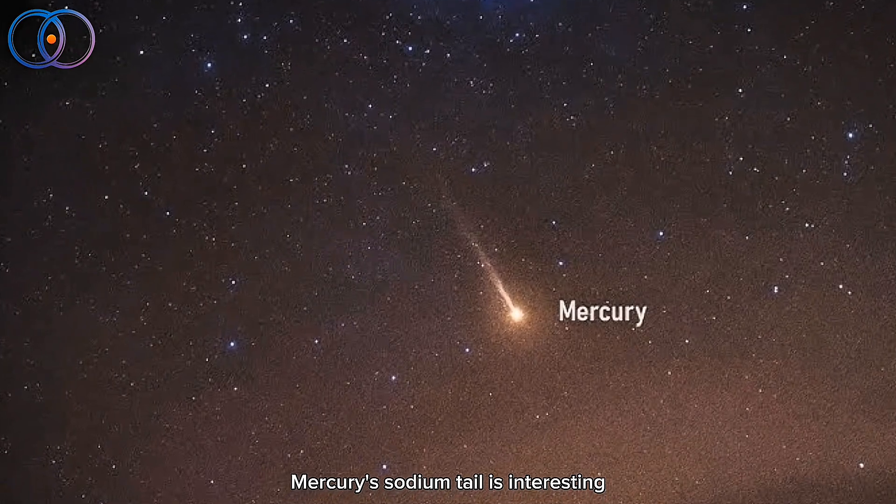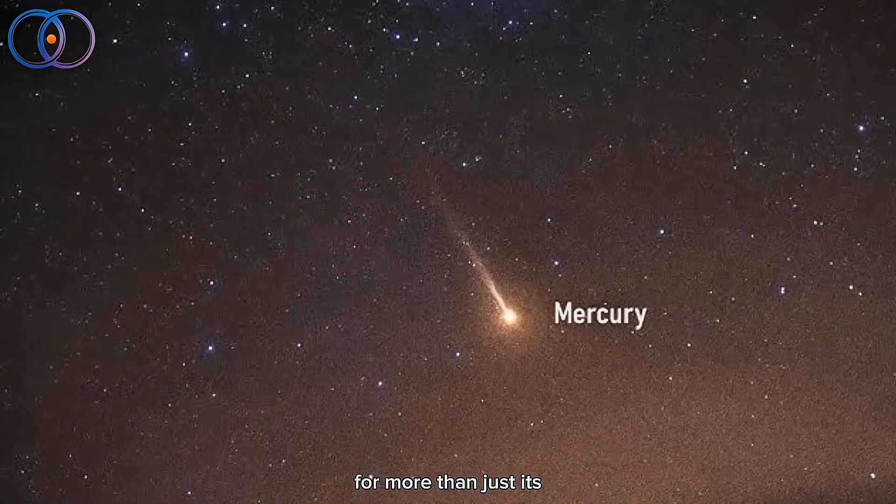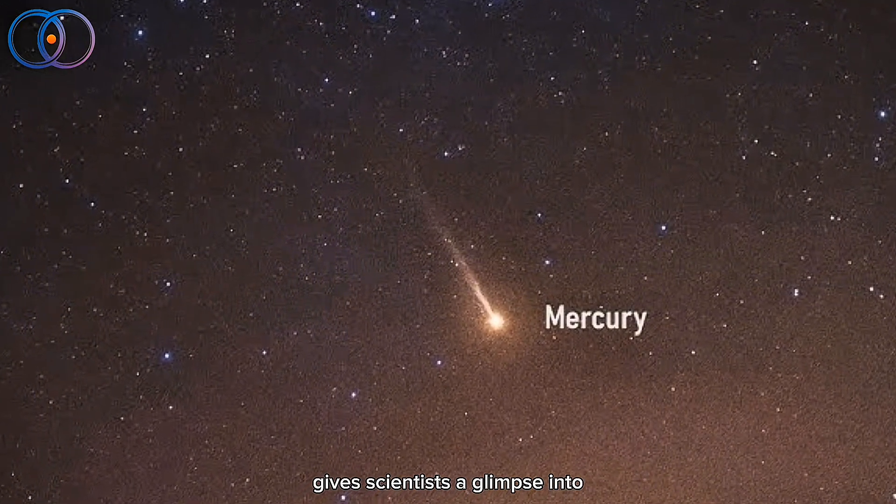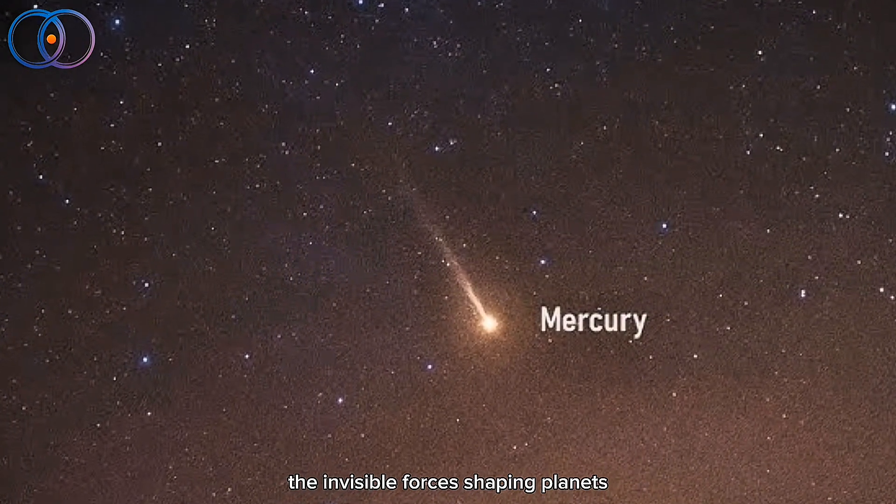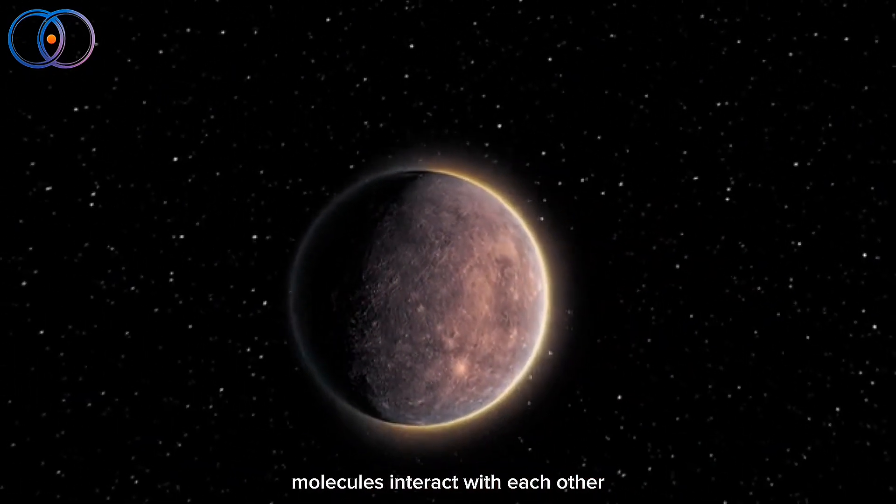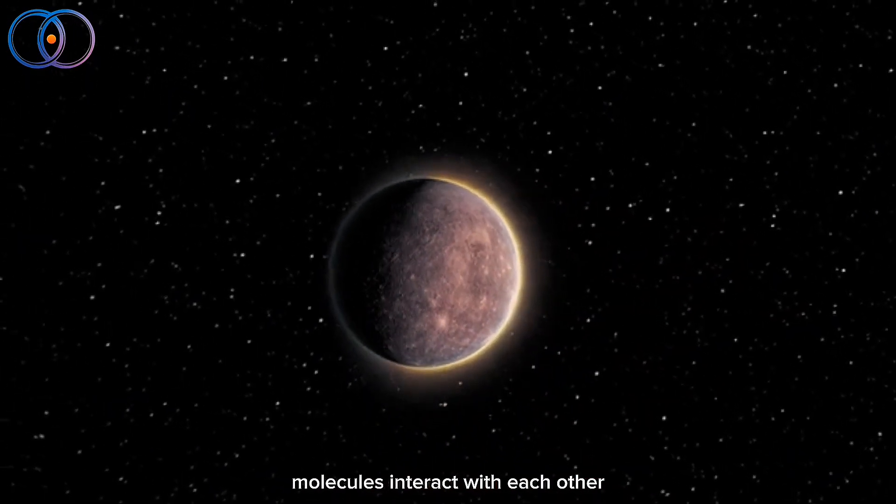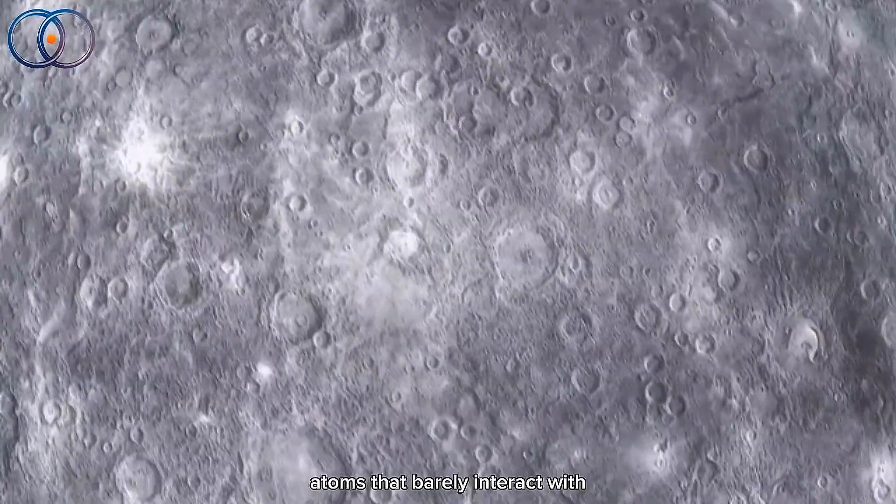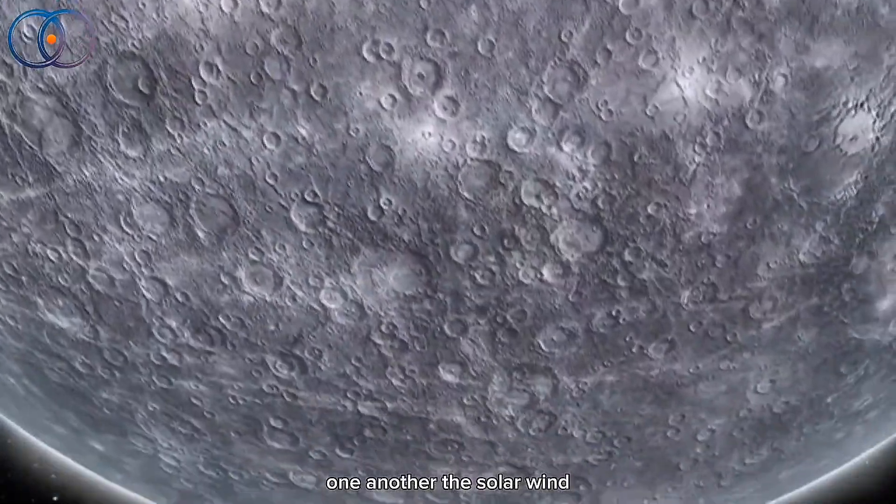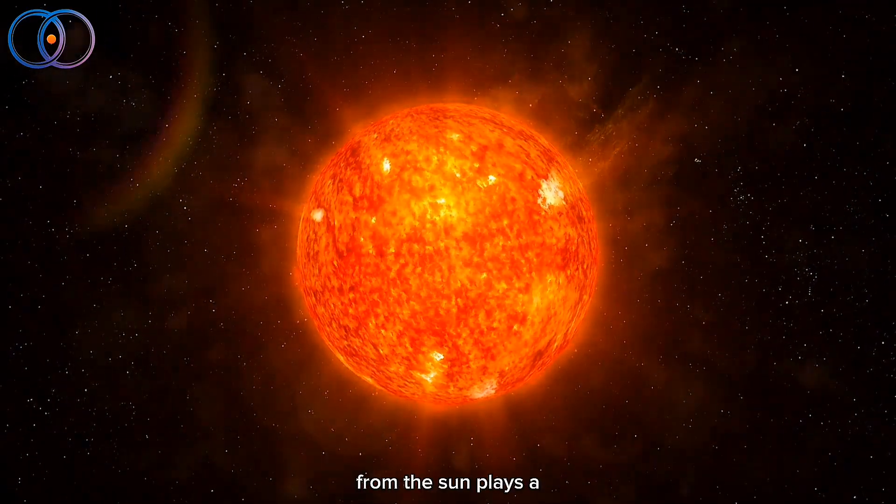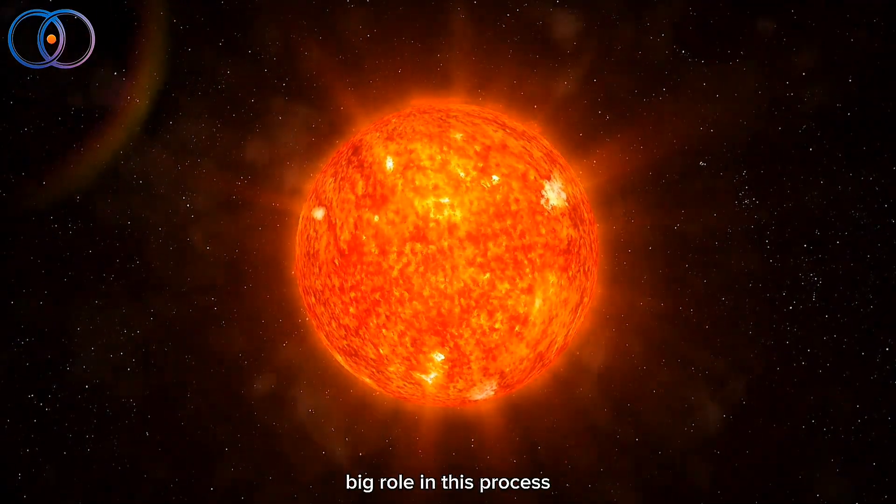Mercury's sodium tail is interesting for more than just its size. The way it's formed gives scientists a glimpse into the invisible forces shaping planets. Mercury doesn't have a traditional atmosphere like Earth, where air molecules interact with each other. Instead, it has an exosphere, a super-thin layer of atoms that barely interact with one another. The solar wind, a stream of charged particles from the sun, plays a big role in this process.